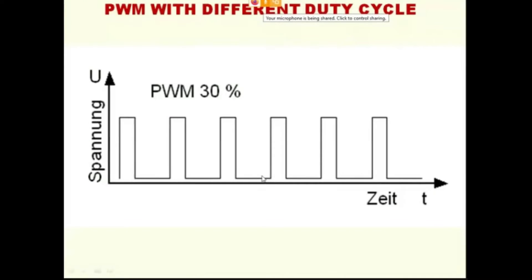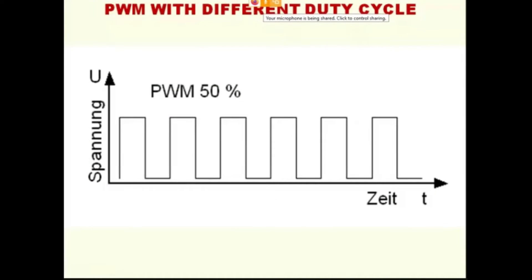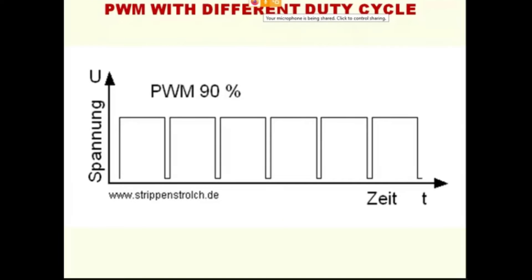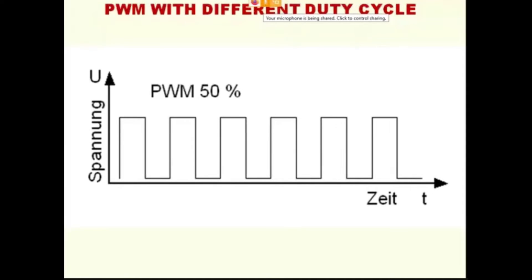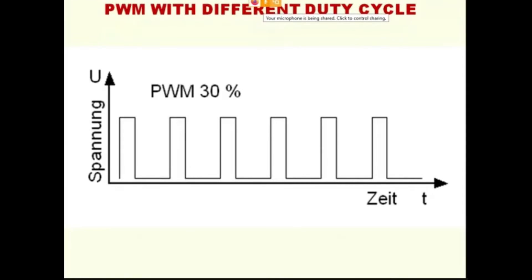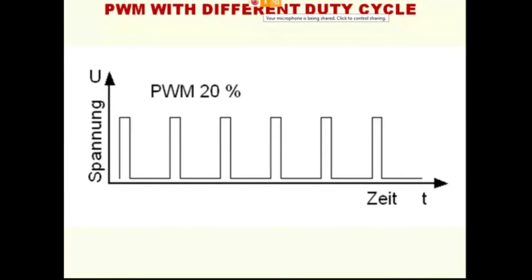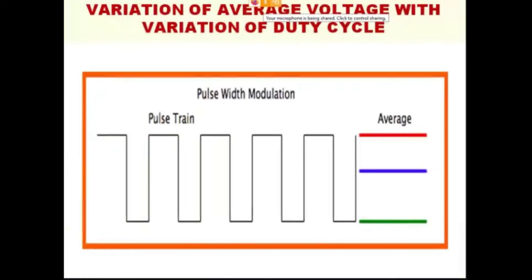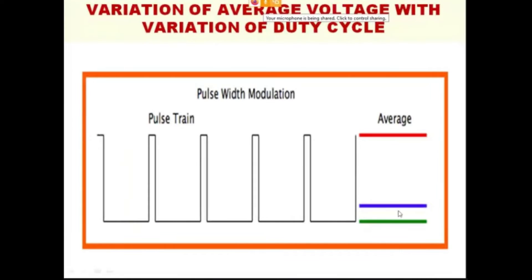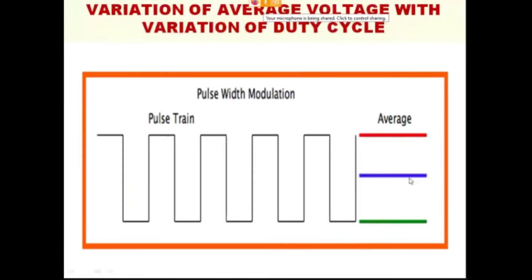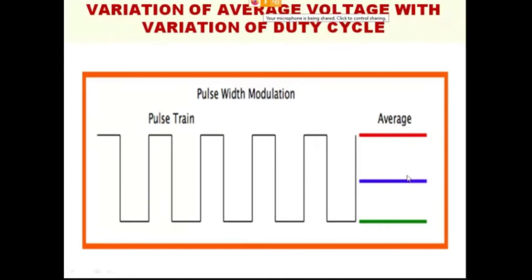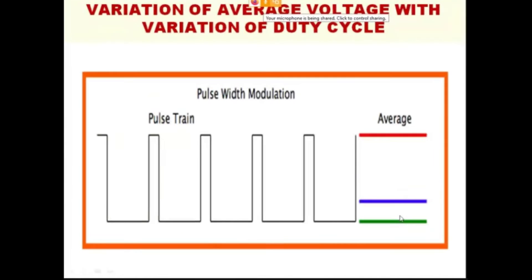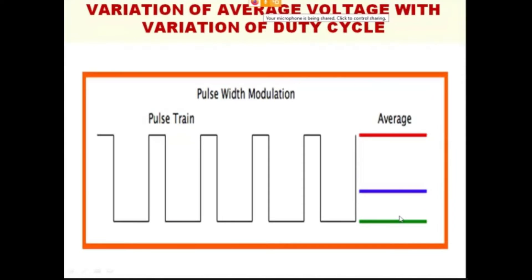Look at the screen, it is very interesting. With this increasing and decreasing, this animation will help us to understand how pulse width modulation works. Look at the blue color mark — the average voltage increases when the width increases, and the average voltage decreases when the width decreases.